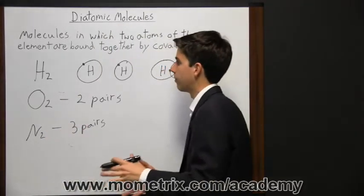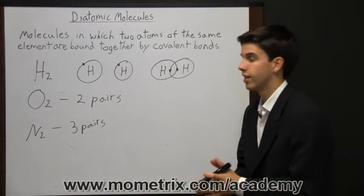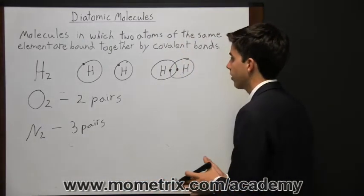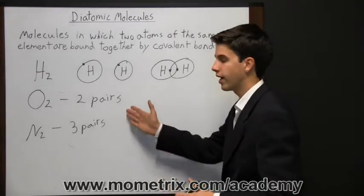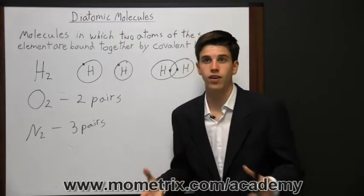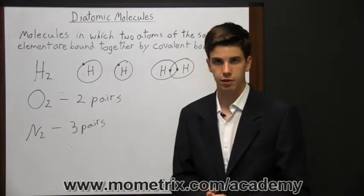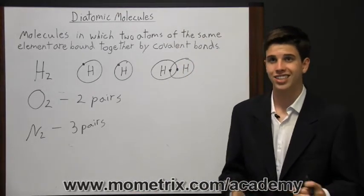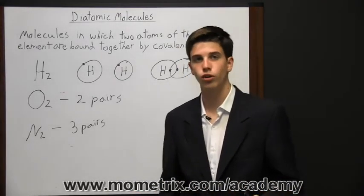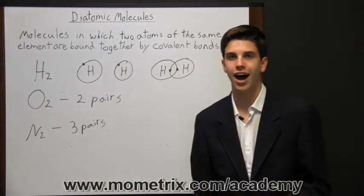Although a hydrogen molecule is a very simple illustration of a diatomic molecule, there can also be two pairs or even three pairs of valence electrons between them. Many gases are diatomic molecules, such as oxygen, nitrogen, fluorine, chlorine, bromine, and iodine.